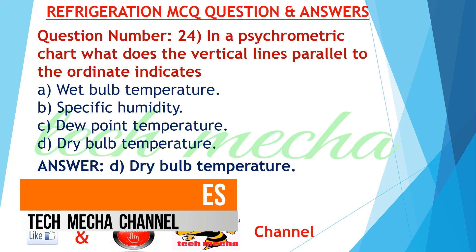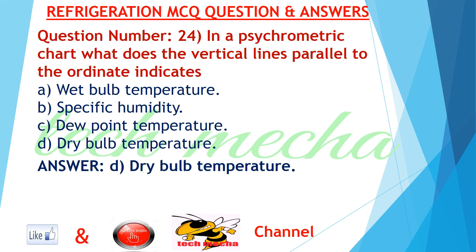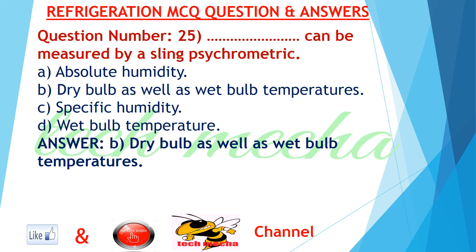Question number 24: In a psychrometric chart, what do the vertical lines parallel to the ordinate indicate? A. wet bulb temperature, B. specific humidity, C. dew point temperature, D. dry bulb temperature. Answer: D. dry bulb temperature.